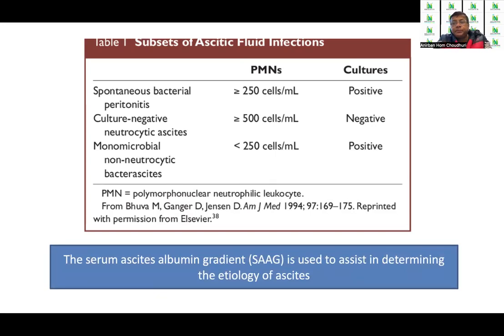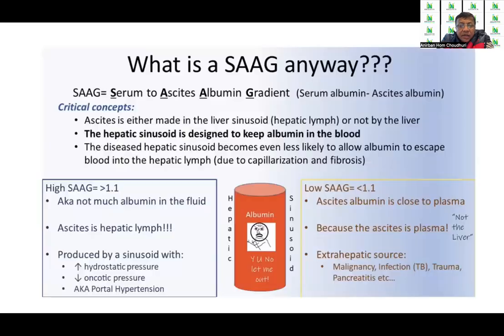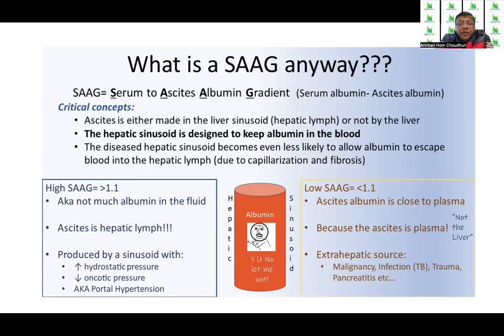An important investigation to determine the etiology of ascites is the serum ascites albumin gradient, or SAAG — the difference between serum albumin and ascites albumin. The key concept is whether the ascites is made in the liver sinusoid or not. The diseased hepatic sinusoid is even less likely to allow albumin to escape into the hepatic lymph due to capillarization and fibrosis. A high SAAG greater than 1.1 means there is not much albumin in the fluid; the ascites is hepatic in origin with high hydrostatic pressure, reduced oncotic pressure, or portal hypertension.